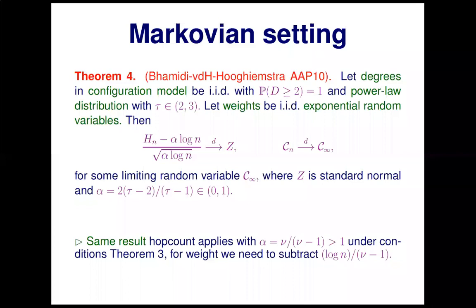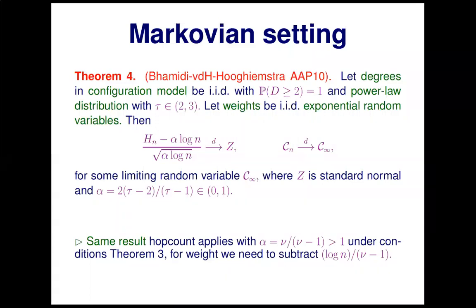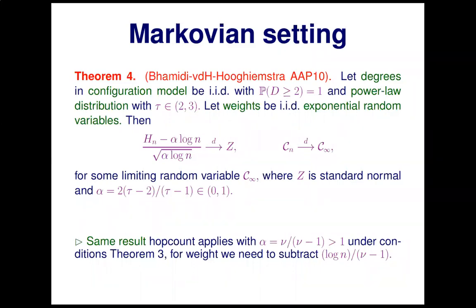When the degree variance is infinite and we assume IID exponential weights — the Markovian setting — it turns out you can traverse information from source to destination in an amount of time that is tight. Irrespective of how large the network is, in a finite amount of time you will actually be able to send information from a uniform source to a uniform destination. At the same time, there is still a central limit theorem for the number of edges in the path. There are still many edges in the path, but their weights become increasingly smaller such that the total weight along the optimal path is summable. This is super efficient routing.